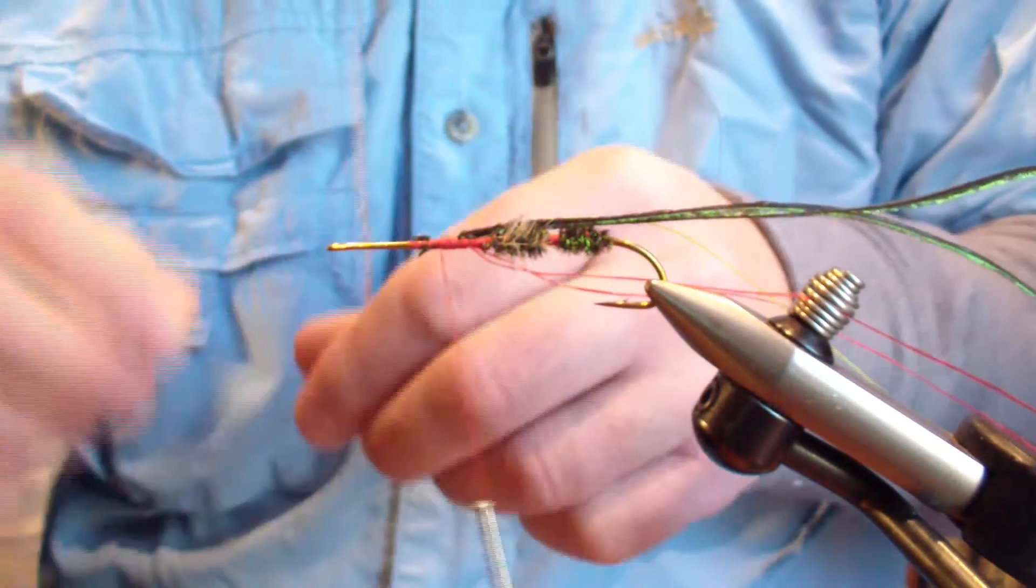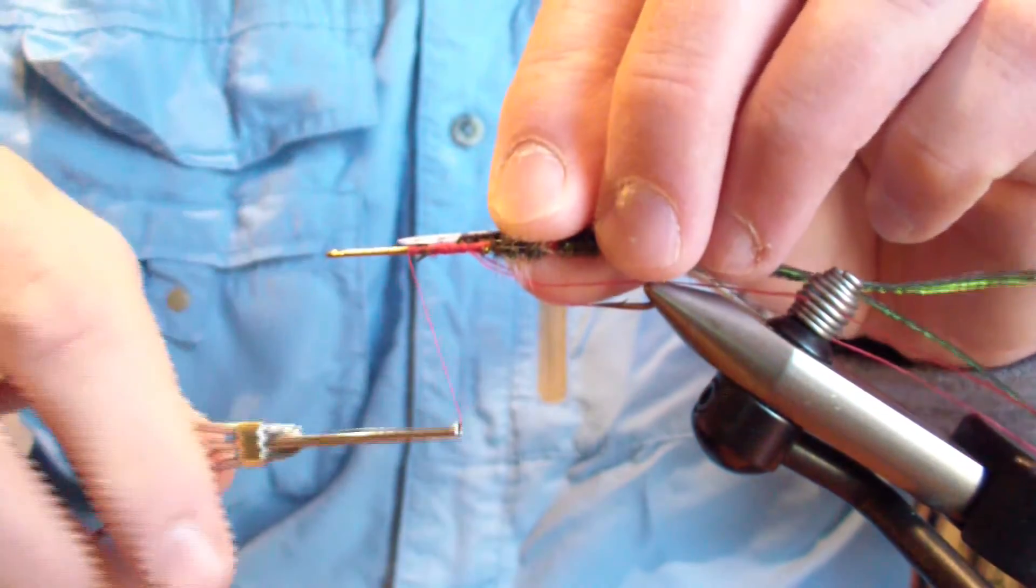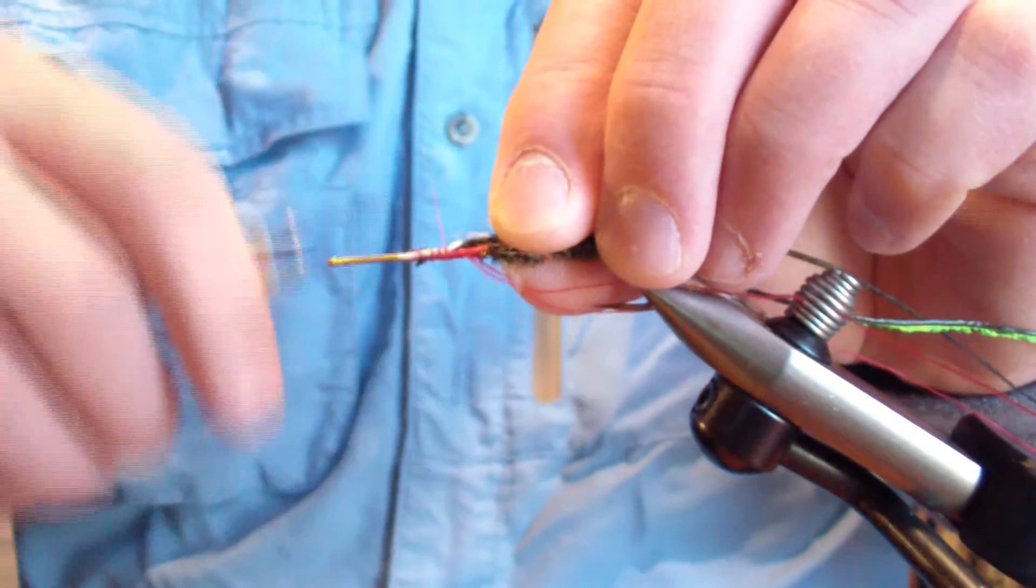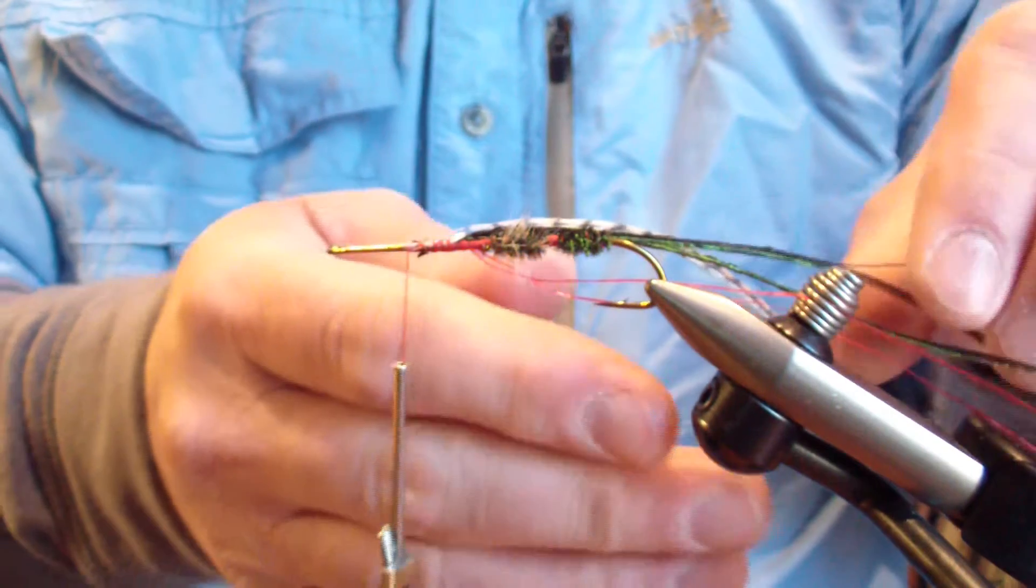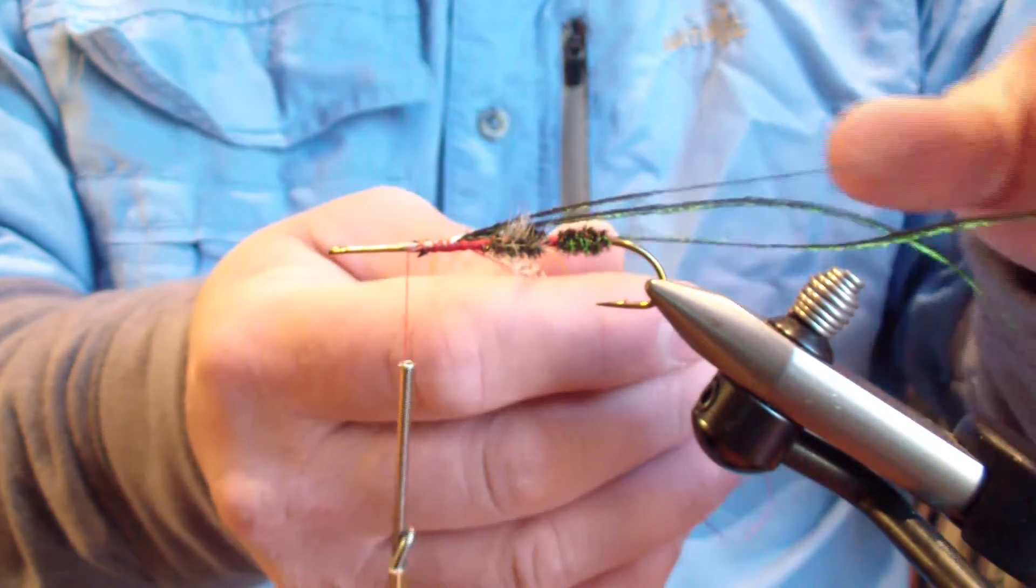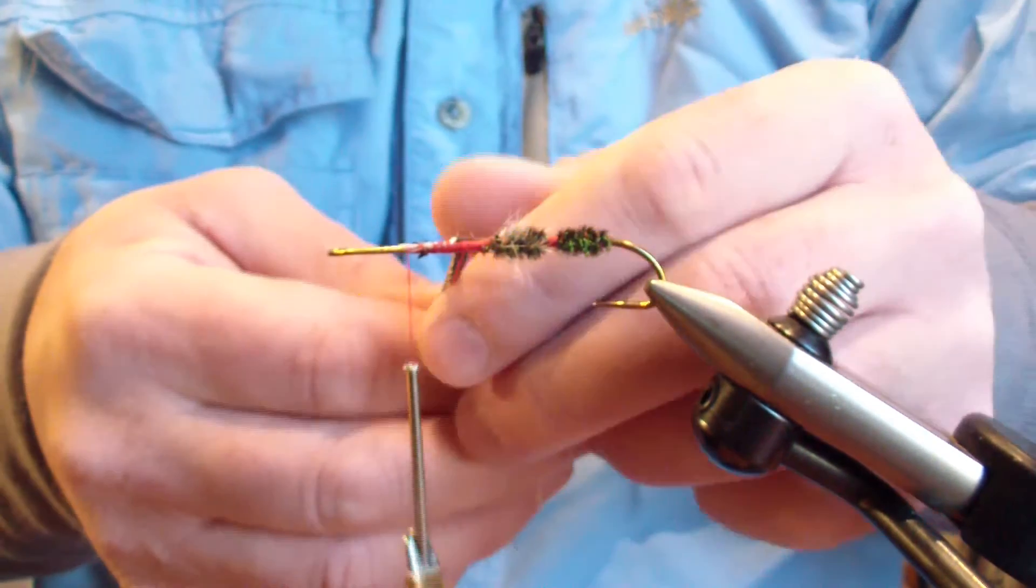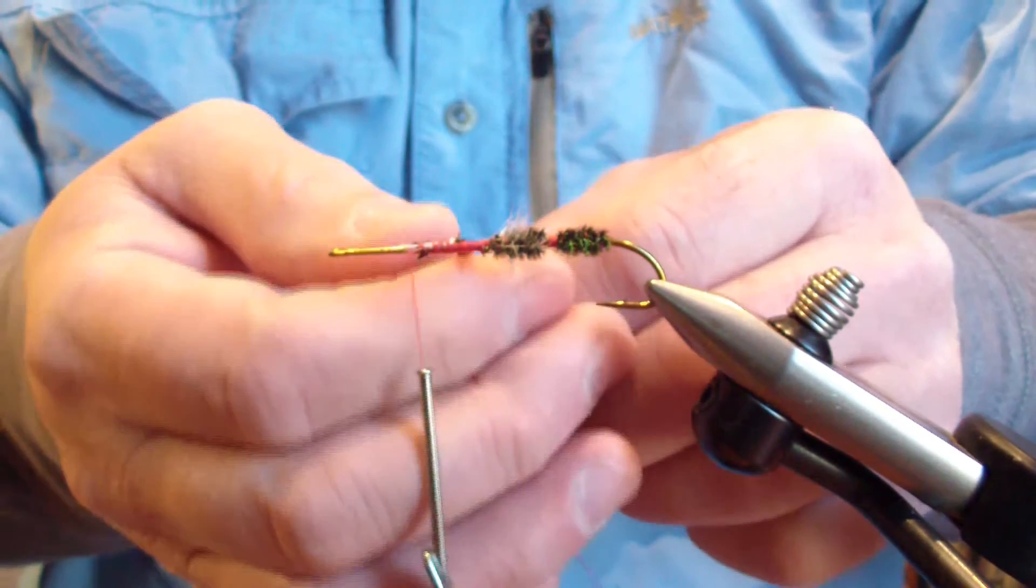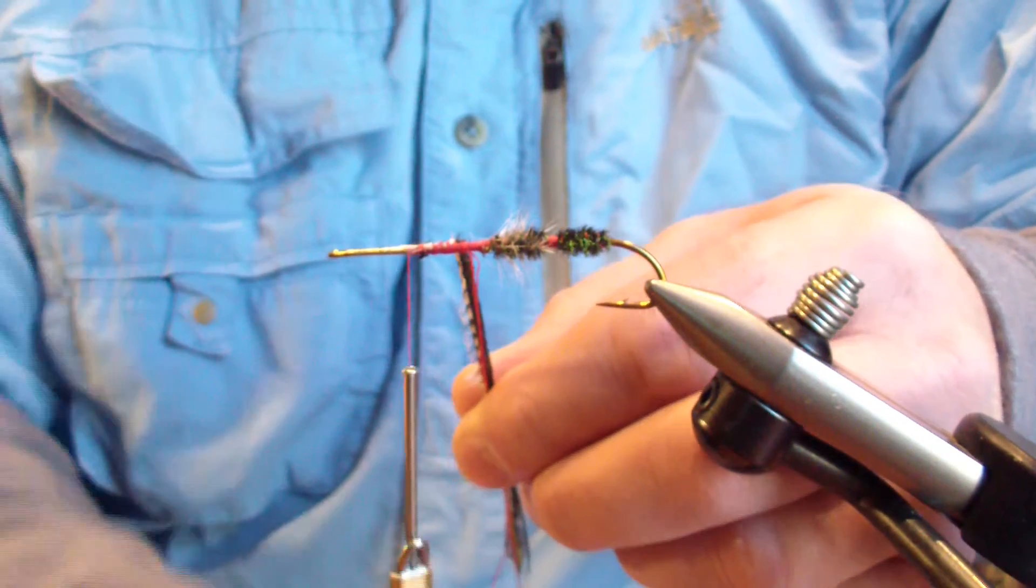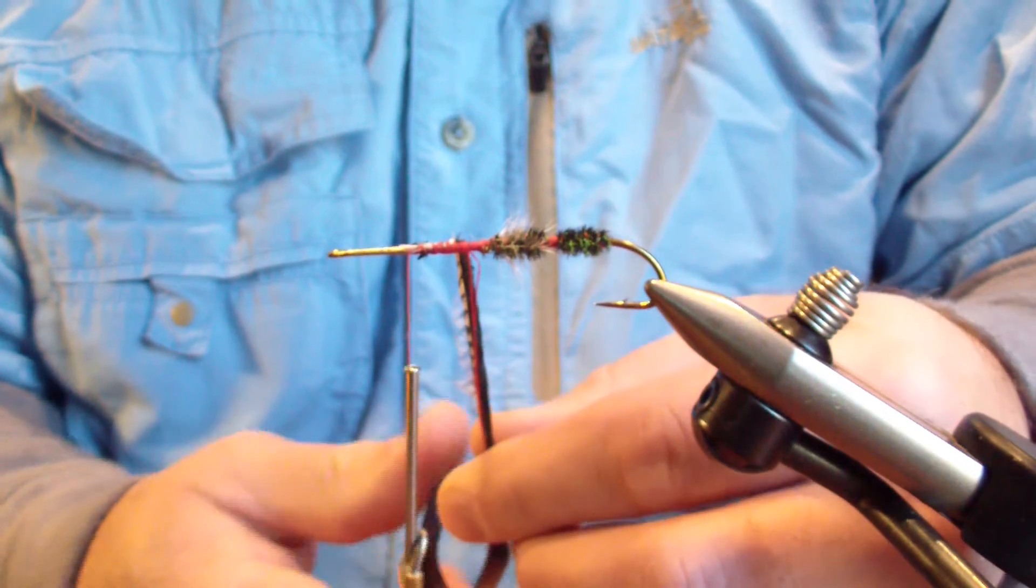And then we're going to tie in our hackle once more, tip first. And then once again we're going to sweep it all together. The only thing you want to make sure that you do here differently is make sure that you pull that wire, kink that wire just a little bit at the shank, and give that a little bit of a harder pull so that it doesn't have a rounded bend at the start.